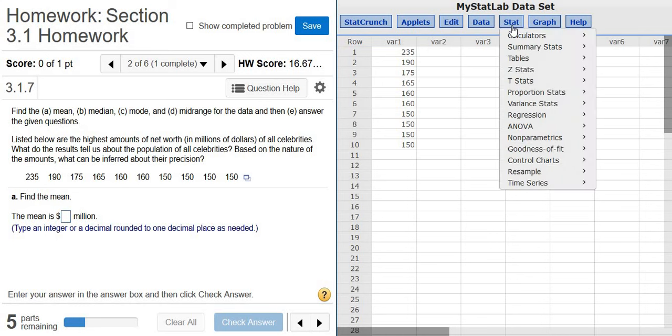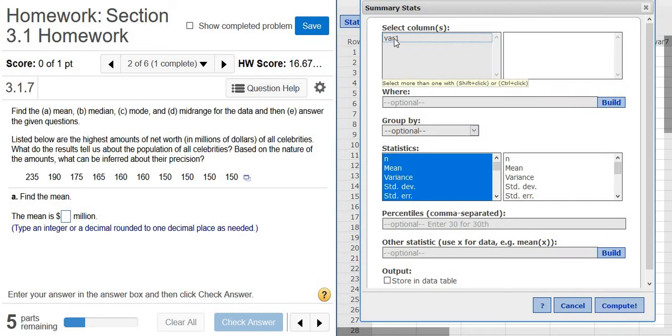Then you go to Stat, Summary Stats, Columns. Left-click, and then you pick where it says var1 or variable1.